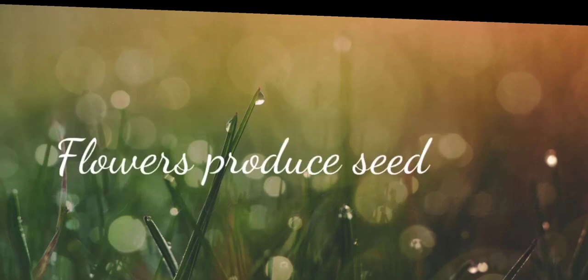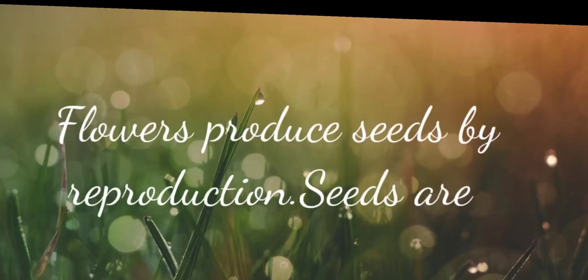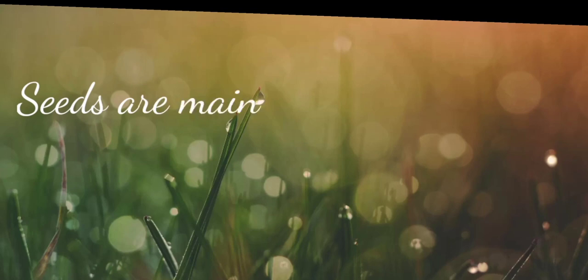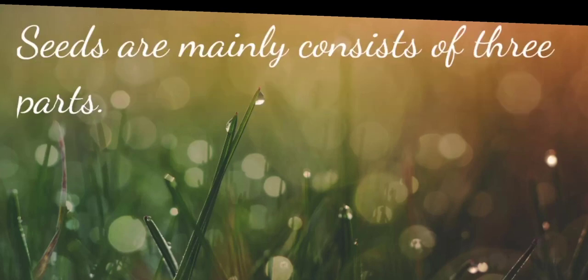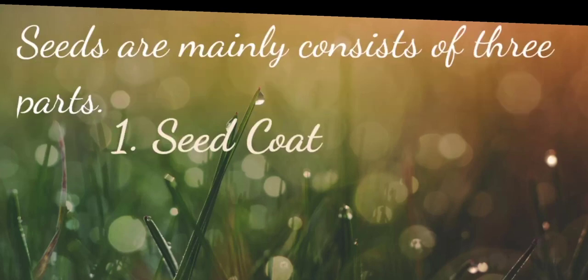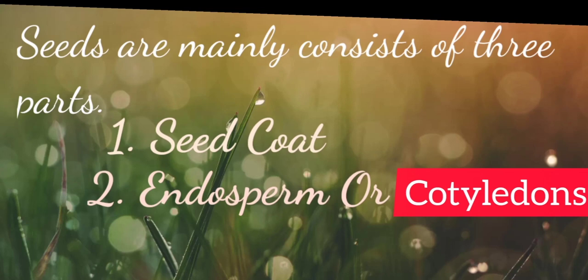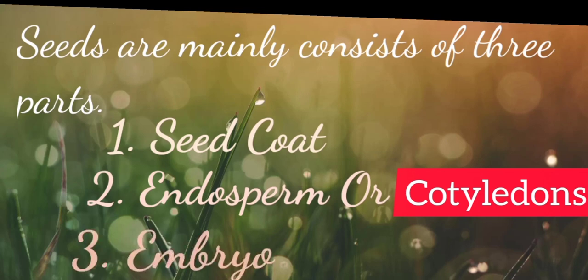Flowers produce seeds by reproduction. Seeds are very important as they grow to produce a new plant. Seeds mainly consist of three parts: seed coat, endosperm or cotyledons, and embryo.